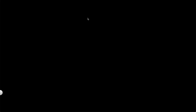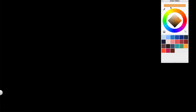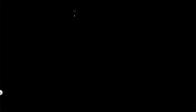In this video we're going to talk about the fastest way to graph something in the polar coordinate plane. Let's work with the same function we had in the last video, where r is equal to sine of theta. So we have the function r equals sine of theta, and we want to graph this in the polar coordinate plane.